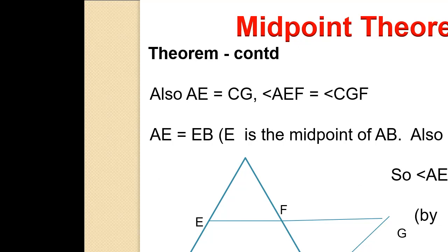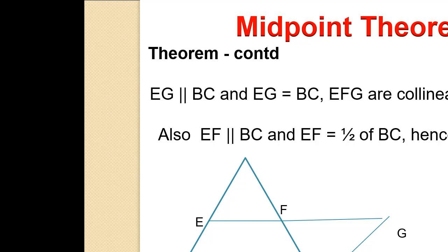Also, AE equals EB since E is the midpoint of AB. Therefore EB is parallel to CG. So EG is parallel to BC and EG equals BC, meaning EBCG is a parallelogram. Since E, F, G are collinear and EF equals FG, it follows that EF is parallel to BC and EF equals half of BC. Hence the theorem is proved.